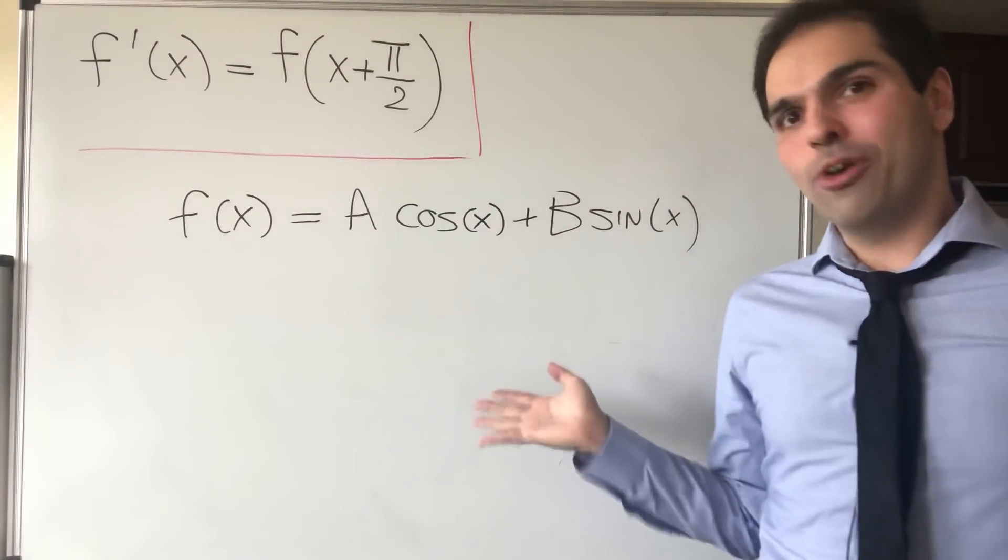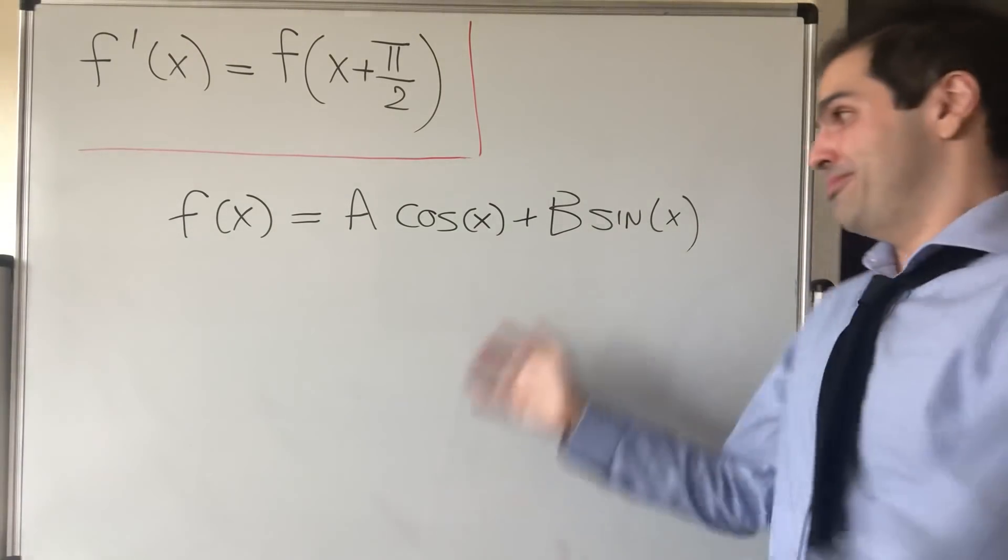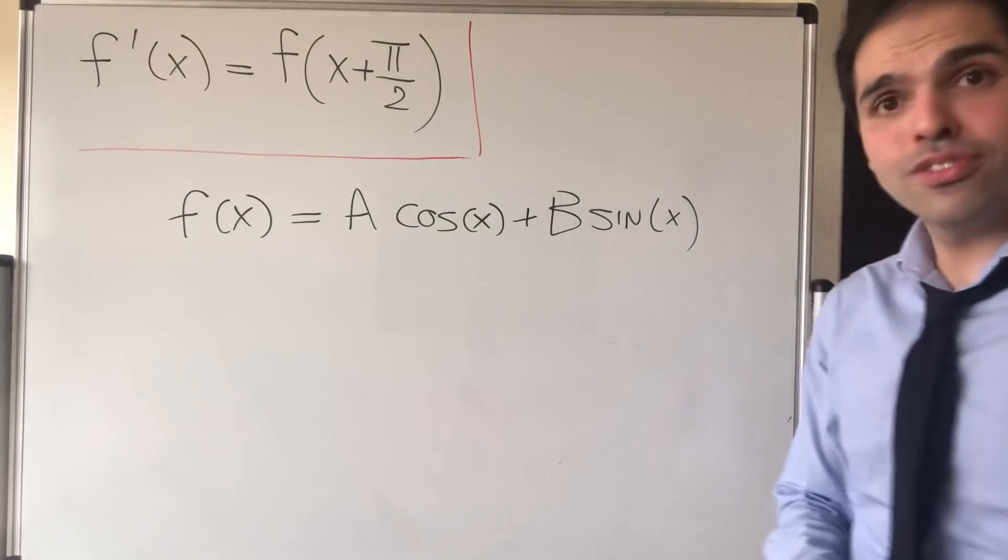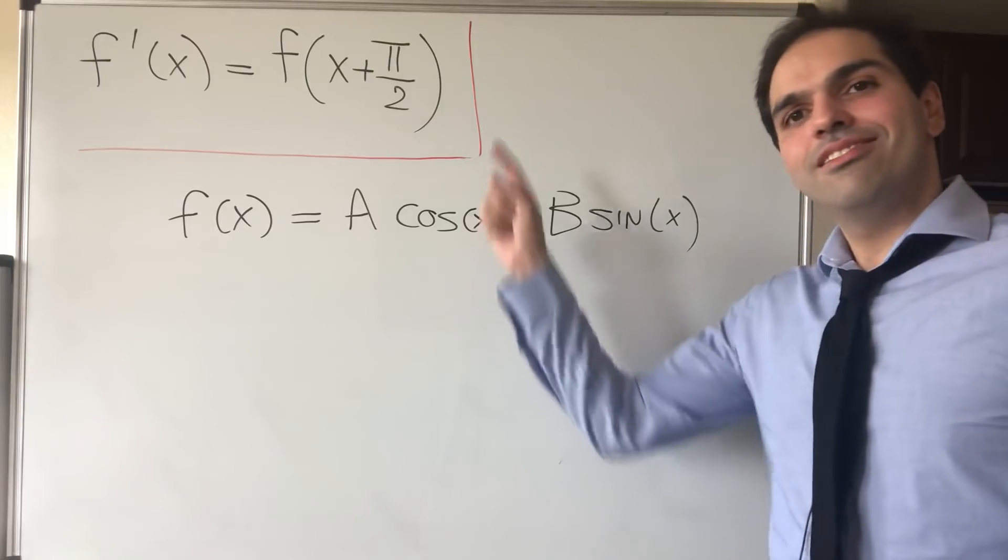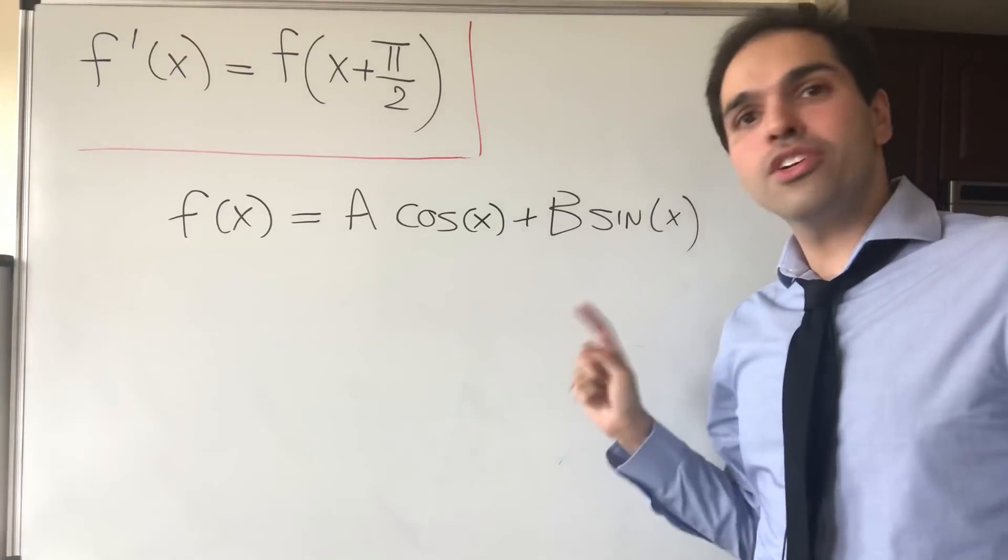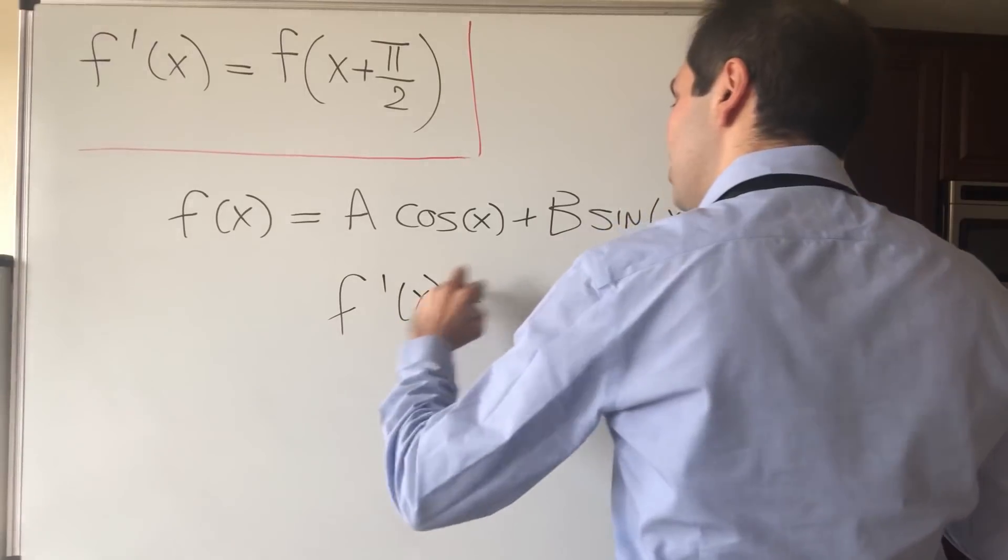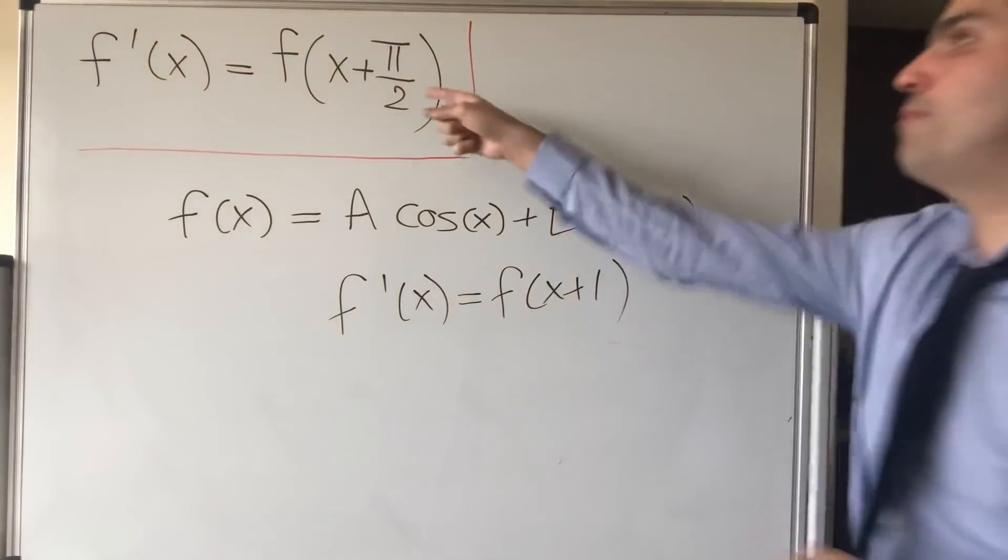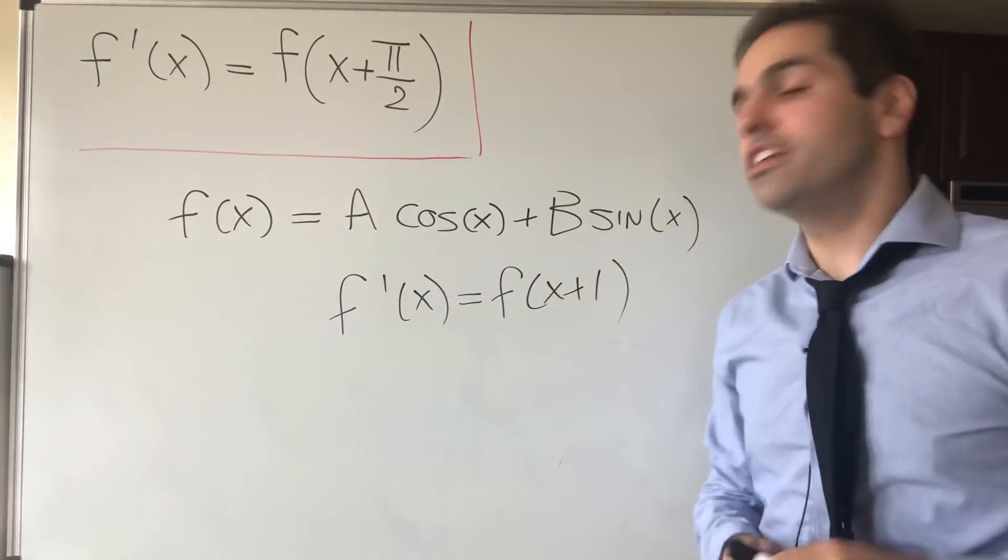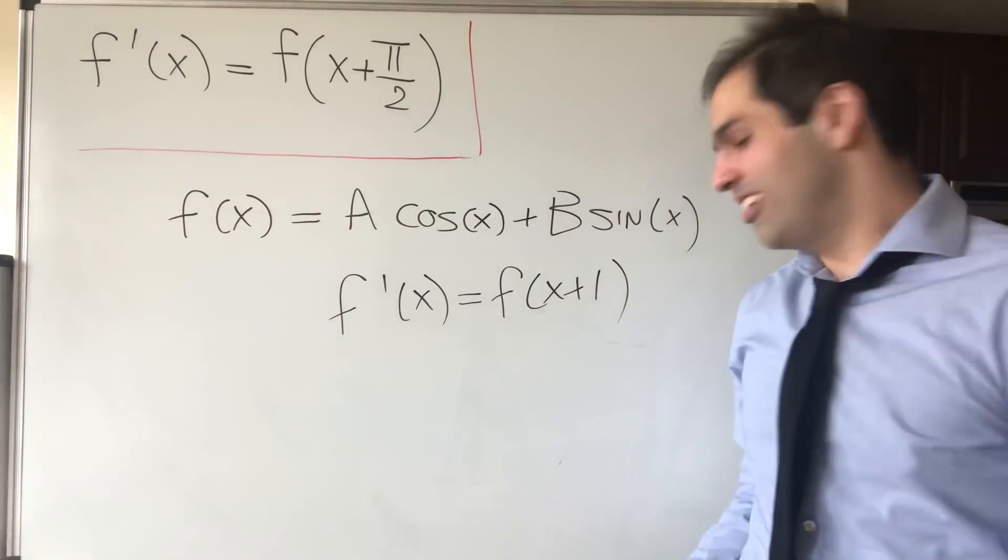But of course there are many open questions which I don't know the answer to. Are there other solutions? Could there be other cosine-sine solutions like that? And also, of course, with π/2 you can just guess sine and cosine. But here's a question I wasn't able to solve: What about f'(x) = f(x+1)? What if you replace π/2 by 1? Then at least this cosine-sine trick for me didn't work. But maybe I'll leave it up to you in the comments to figure out how to solve this.